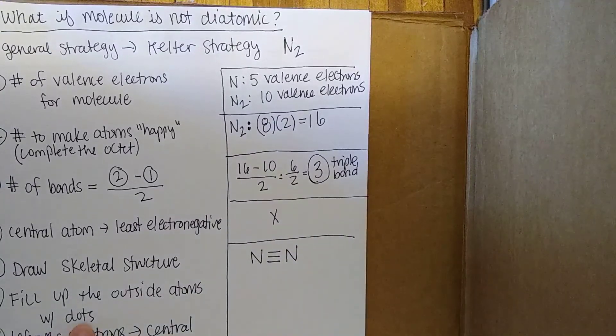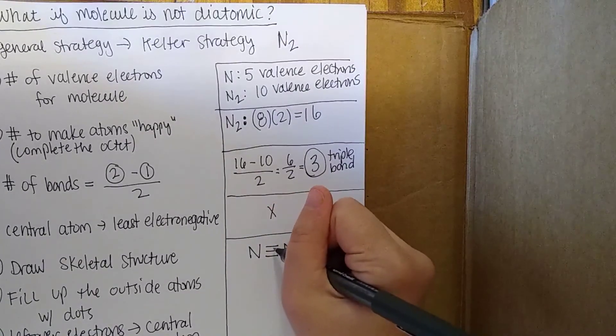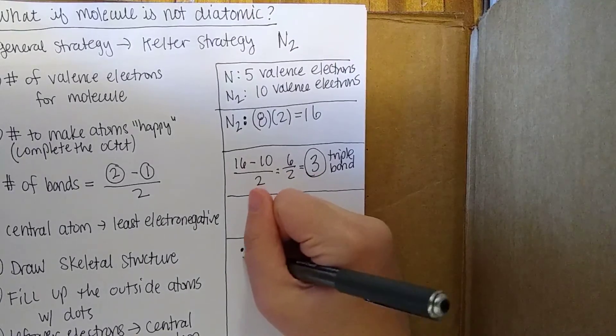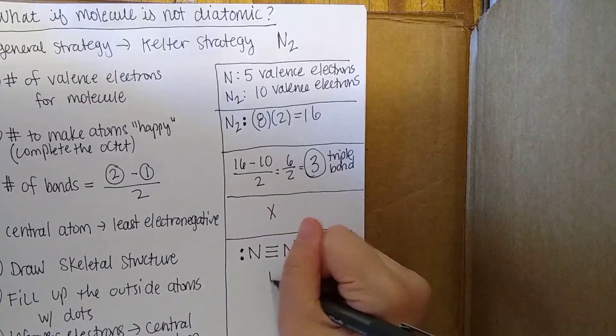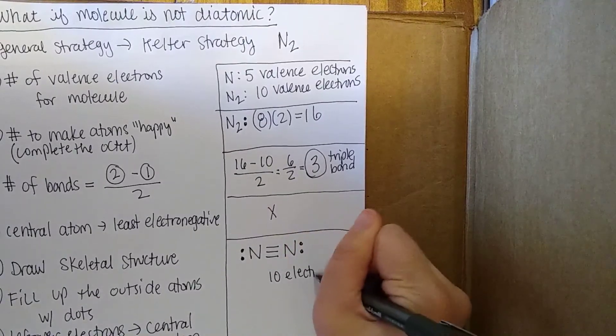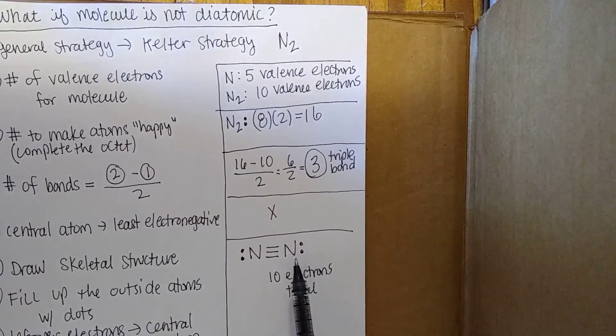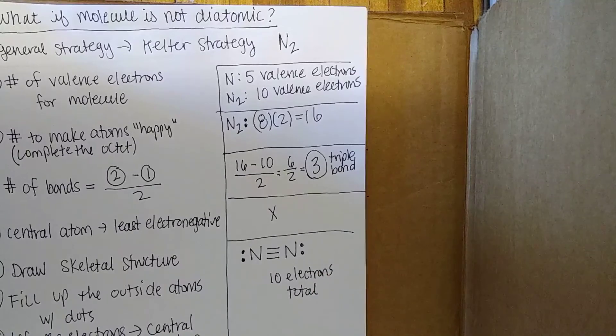And then next we have to do step 6, which is we're going to fill up the outside atoms with dots. So we have 2, 4, 6, 7, 8, 9, 10. So now we have 10 electrons total, just as we should. Each nitrogen has a completed octet, and this is the Lewis structure for N2 using the Kelter strategy.